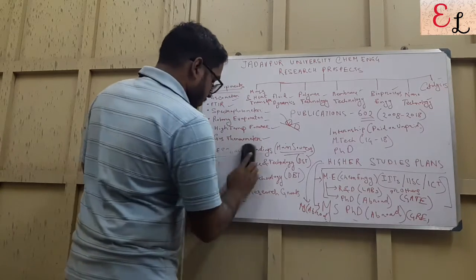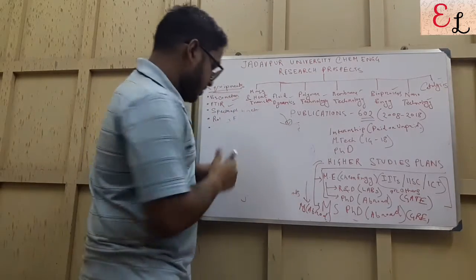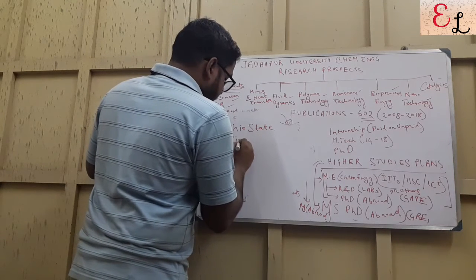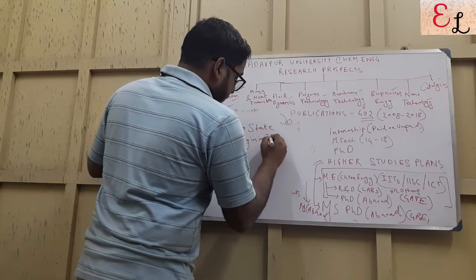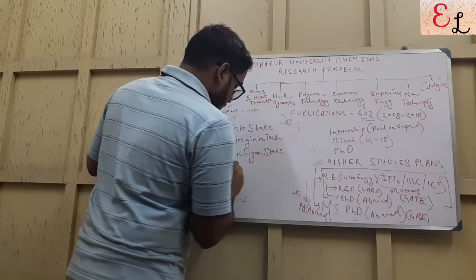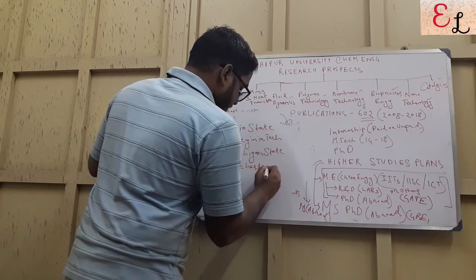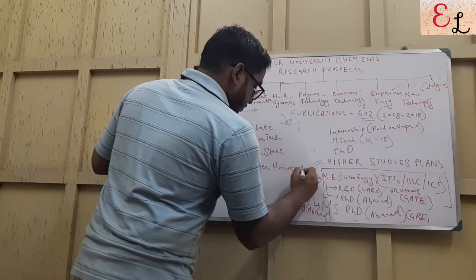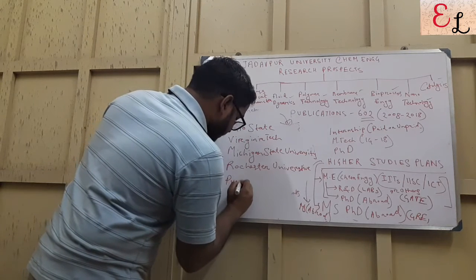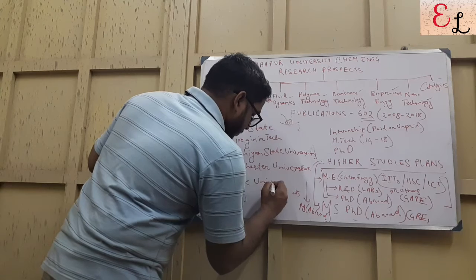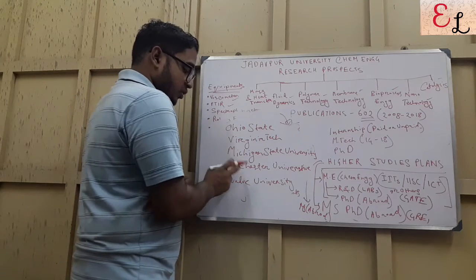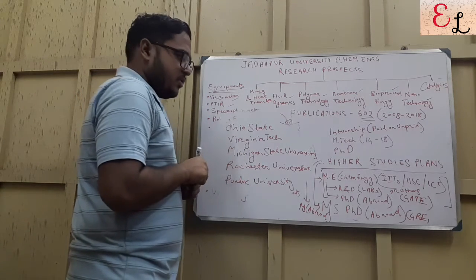Talking about the universities for GRE: Ohio State University, one of my friends has gone there. Virginia Tech, one of my friends is there. Michigan State, my seniors have gone there. Rochester University, another famous university. And Purdue University. These are five of the best universities in USA if you are going for this. These are very good universities you can always go for.